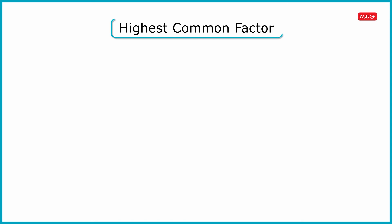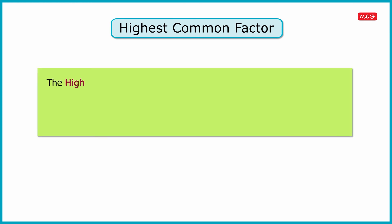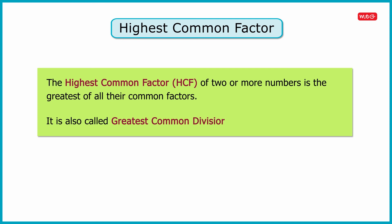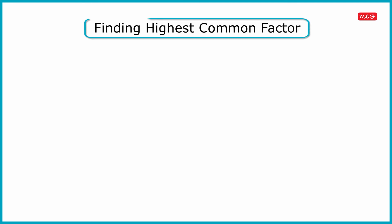Now we will learn about highest common factor, or HCF. The highest common factor of two or more numbers is the greatest of all their common factors. It is also called greatest common divisor, or GCD. Let us now learn how to find the highest common factor of two or more given numbers through an example.